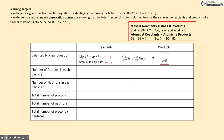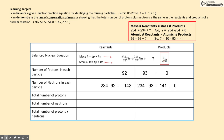We obtain the number of protons in each particle: there are 92 from thorium, and 93 from neptunium. But there are no protons from a beta particle, since a beta particle is an electron. Then we calculate the number of neutrons by subtracting the mass number minus the atomic number: 234 minus 92 gives us 142. From neptunium, 234 minus 93 gives us 141. Notice again, there are no neutrons from the beta particle, since the beta particle is only an electron.